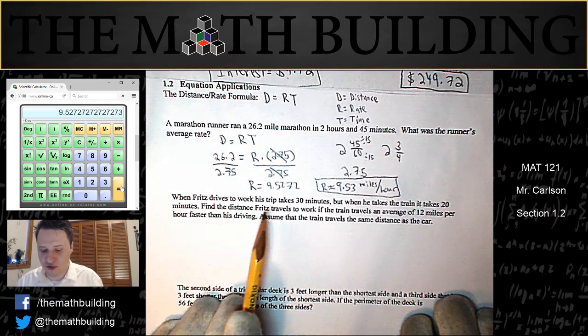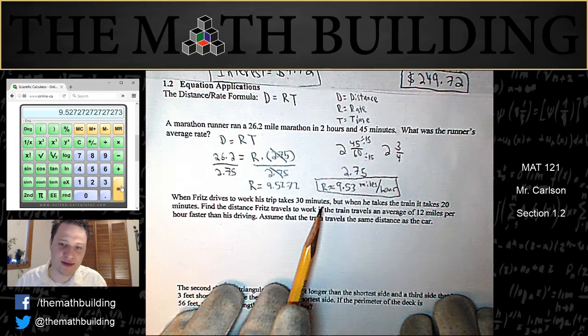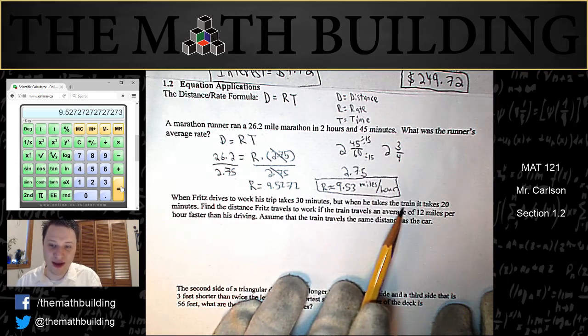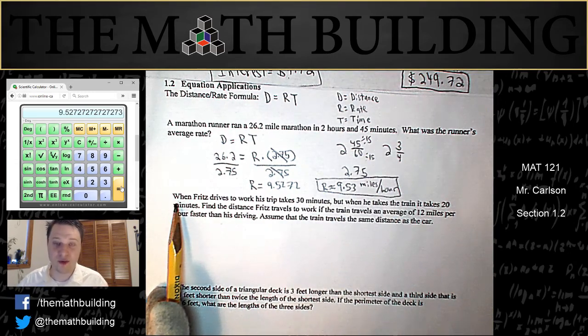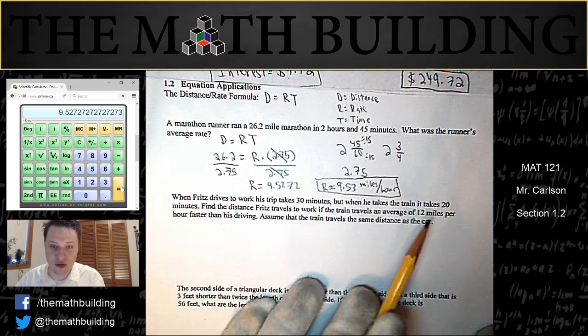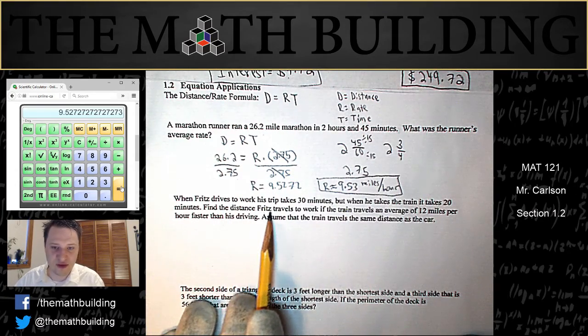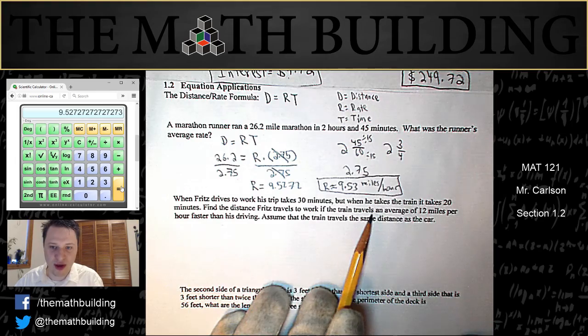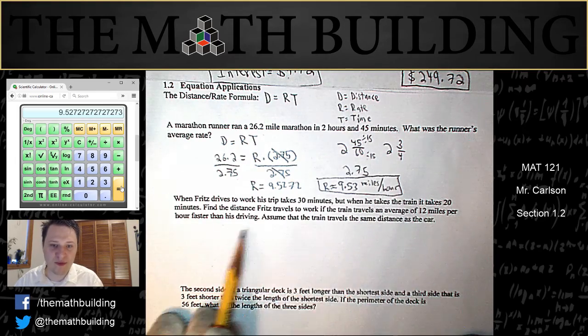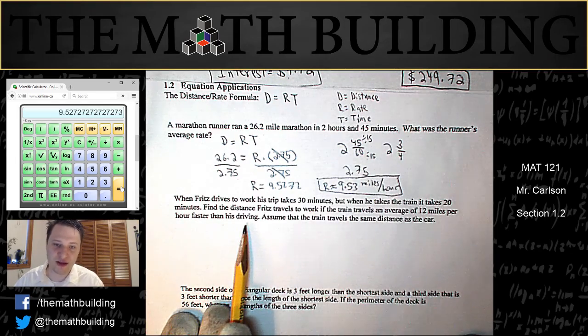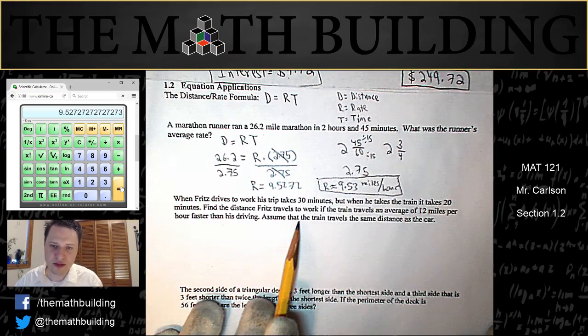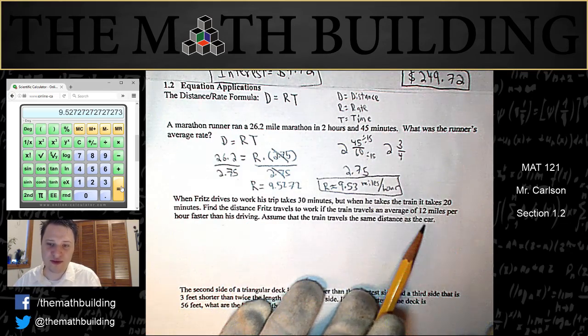Let's do one that's slightly harder. When Fritz drives to work, his trip takes 30 minutes. But when he takes the train, it takes 20 minutes. So as I read that, I think okay, the train is faster than the car. Find the distance it takes Fritz to get to work if the train travels an average of 12 miles per hour faster than his driving. Assume that the train travels the same distance as the car.